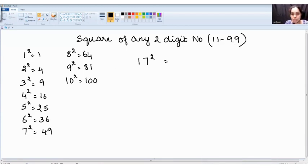Square of any two-digit number, say from 11 to 99. We all know the square of single-digit numbers. What do we mean by square? Multiplying the number by itself is called a square. 1² = 1, 2² = 4, 3² = 9, 4² = 16, 5² = 25, 6² = 36, 7² = 49, 8² = 64, 9² = 81, 10² = 100.